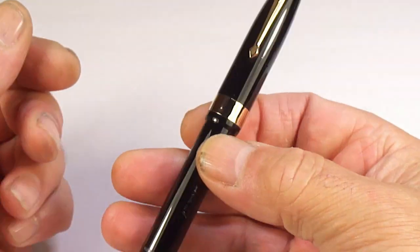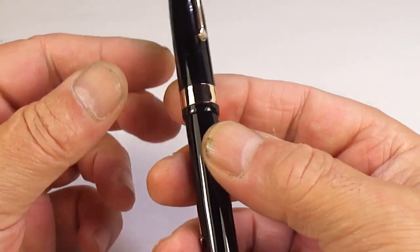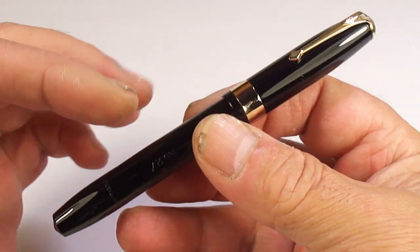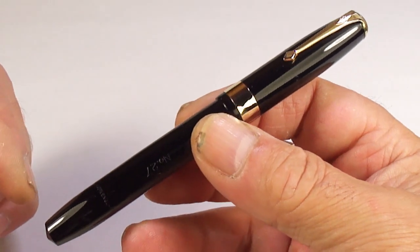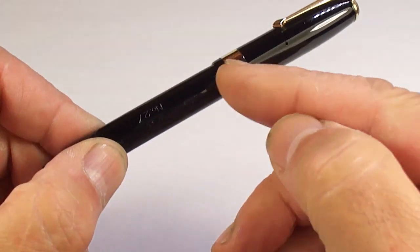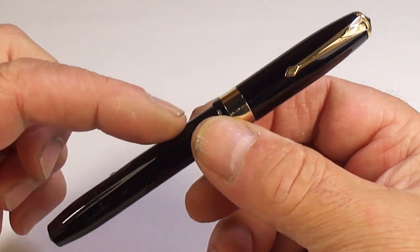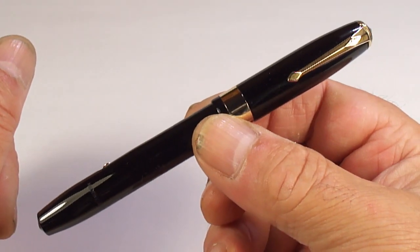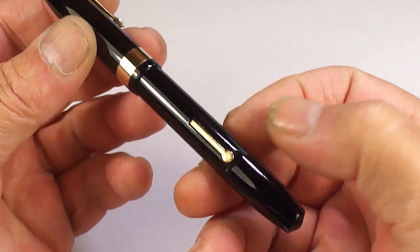The number 27 is actually quite a large, nice chunky pen. The pen capped is around 129 millimeters. Around the barrel it's a nice chunky 11.5 millimeters in diameter, so it is a lovely sized fountain pen.